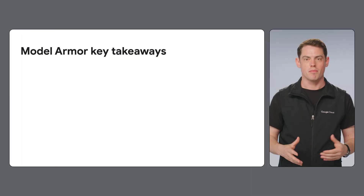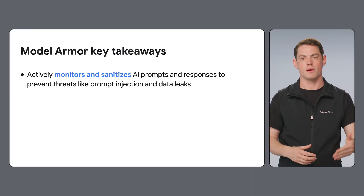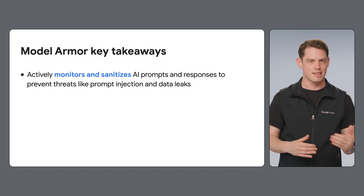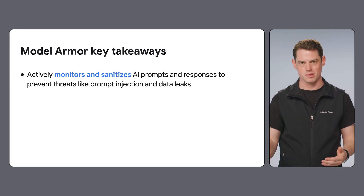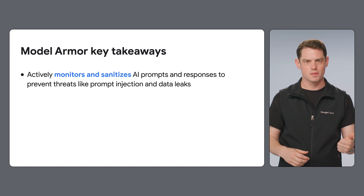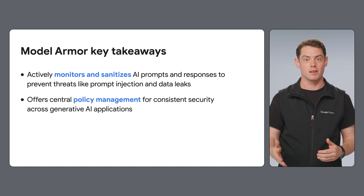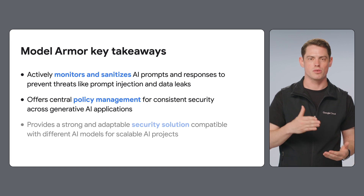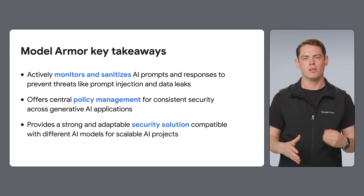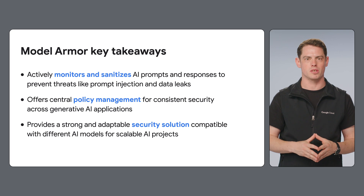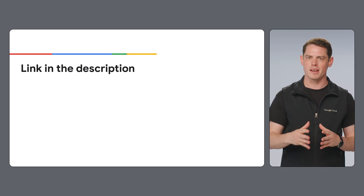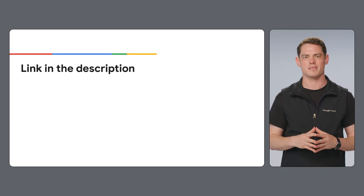To recap, Model Armor is a security layer for generative AI applications that actively monitors and sanitizes prompts and responses to prevent threats like prompt injection and data leaks. Its central policy management and compatibility with different AI models offer a strong and adaptable solution for organizations looking to implement and scale their AI projects securely. Don't let the security challenges of Gen AI prevent your organization from moving beyond initial proofs of concept. Sign into the Google Cloud Console and start protecting your AI models today.